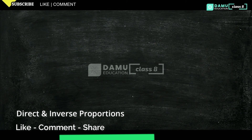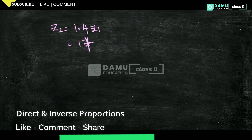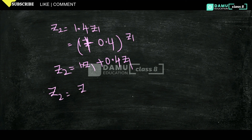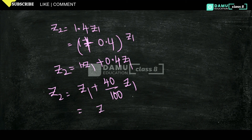We can write z2 equals 1.4·z1 as z2 equals (1 + 0.4)·z1, which equals z1 plus 0.4·z1. Writing 0.4 as 40/100, that is 40% of z1. So z2 equals z1 plus 40% of z1.